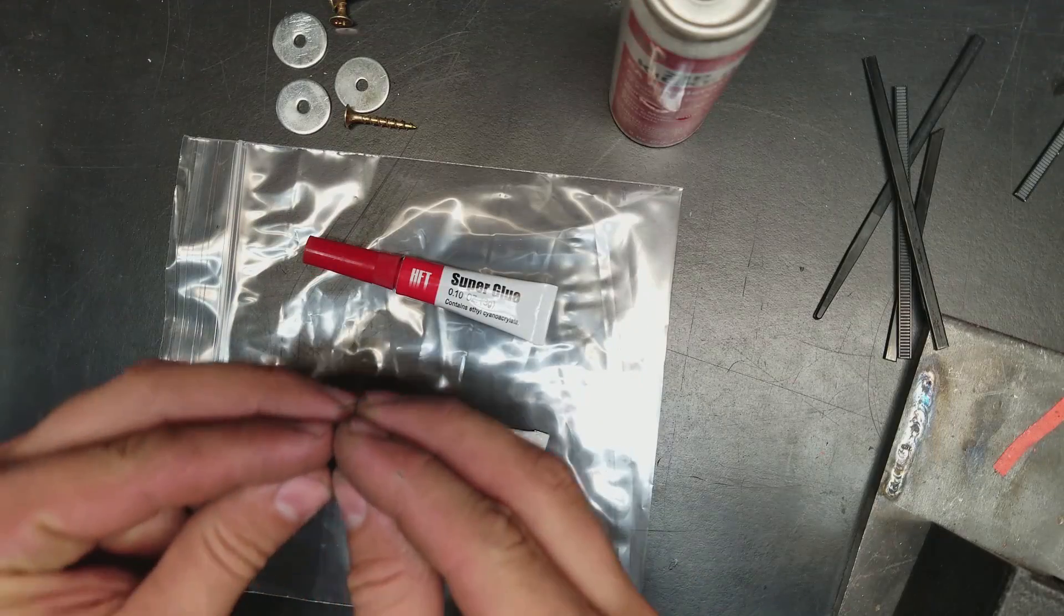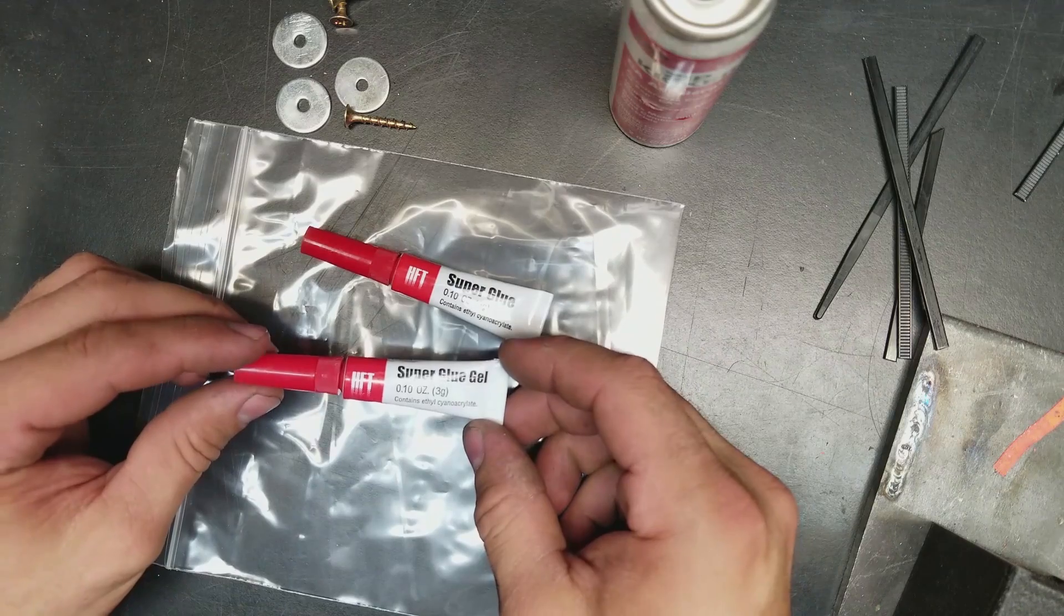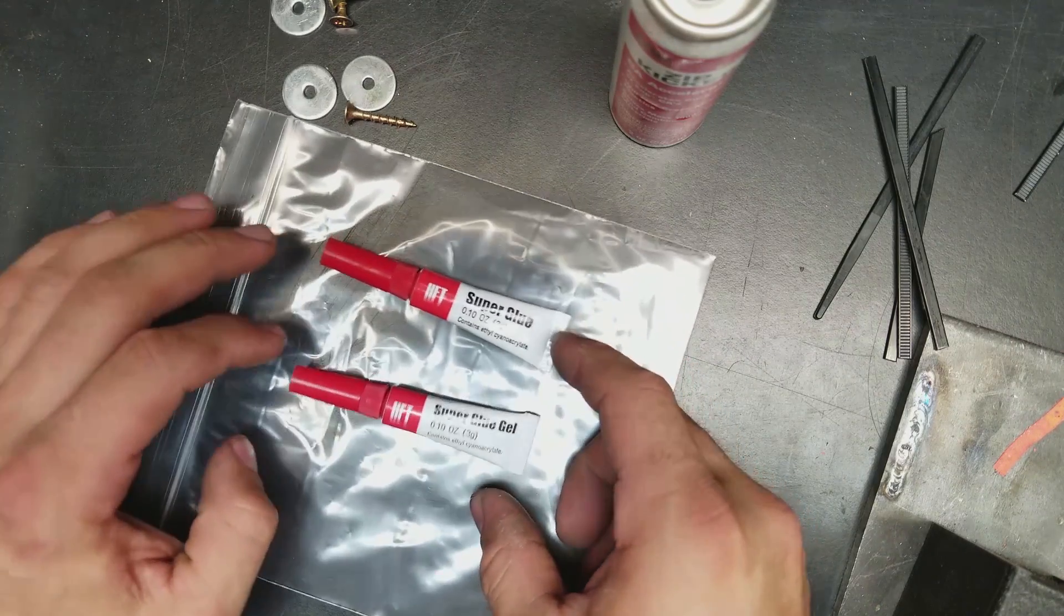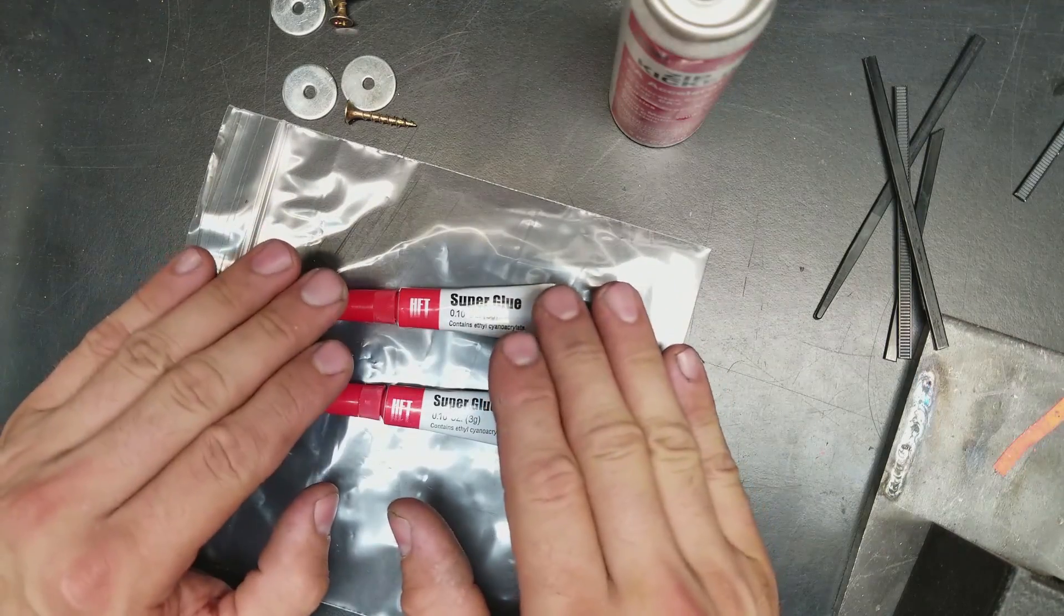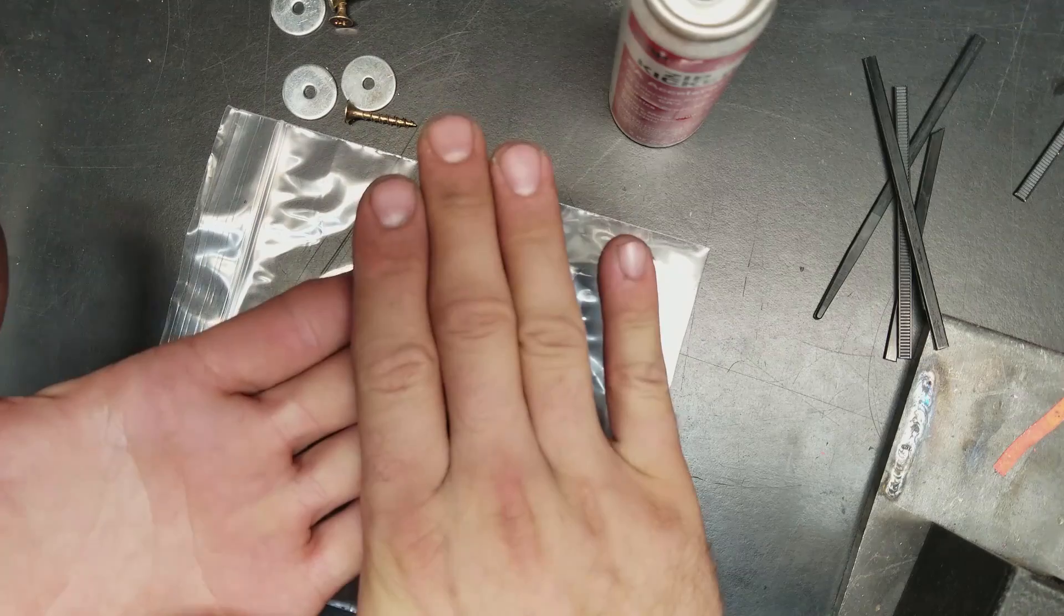Super glue isn't like urethane glues where they expand to fill a space or anything like that. You can get super glue gels that have a very small amount of gap filling ability, but the strength of the bond is best when there's a very small amount of glue that's exactly sealing between the two surfaces.